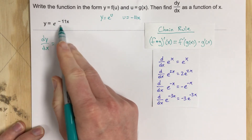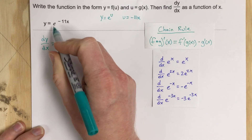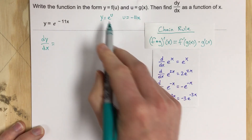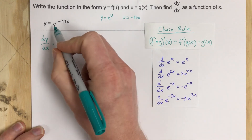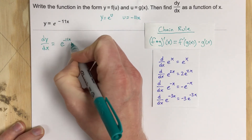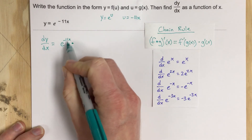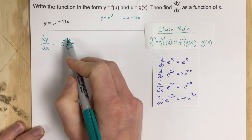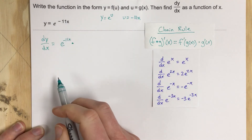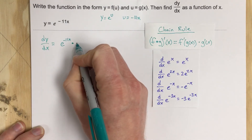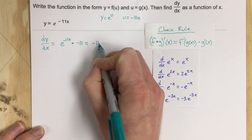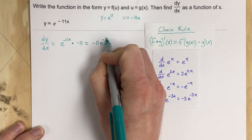We start by doing the derivative of the outside, which is just the derivative of e to the u. The derivative of e to the x is just itself, so this is e to the negative 11x times — that's the derivative of the outside function — times the derivative of the inside function. The derivative of negative 11x is negative 11. So you end up with negative 11 e to the negative 11x.